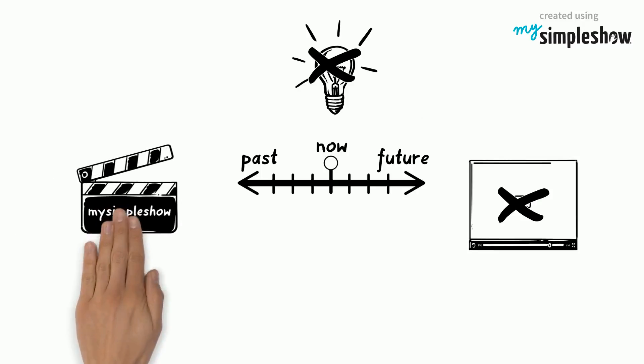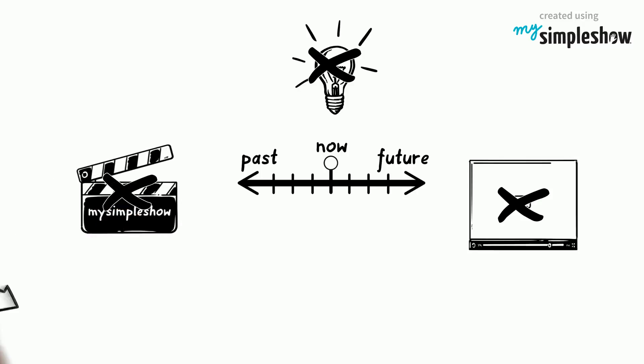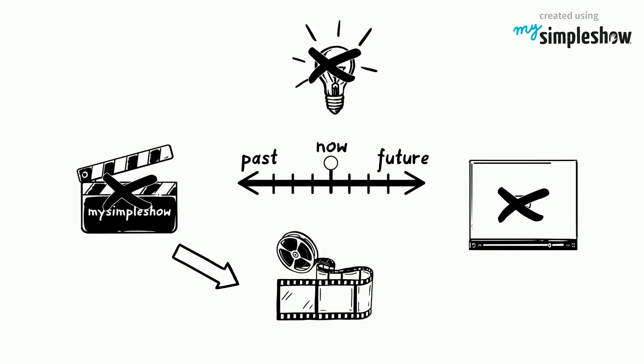Hence, without Thomas Edison, in many regards we would not be able to do the things we do today, including creating our own explainer videos, as videos are micro-movies and thus only possible due to his inventions.